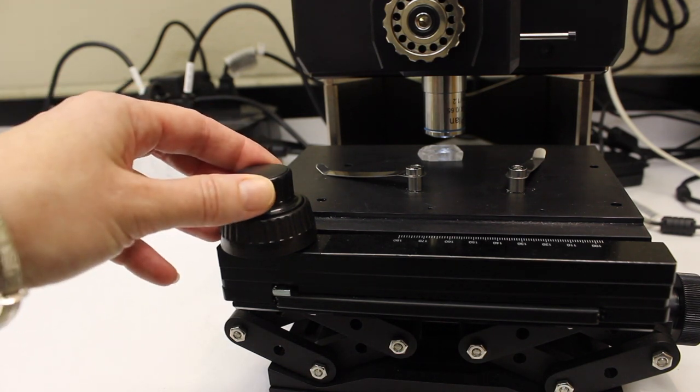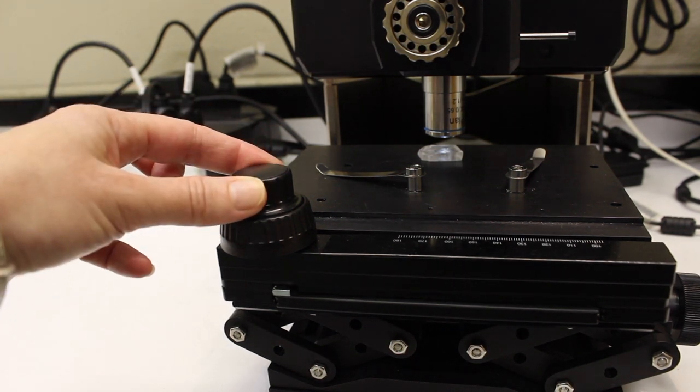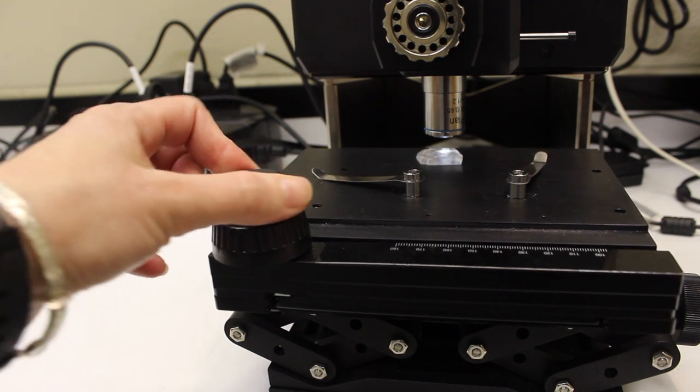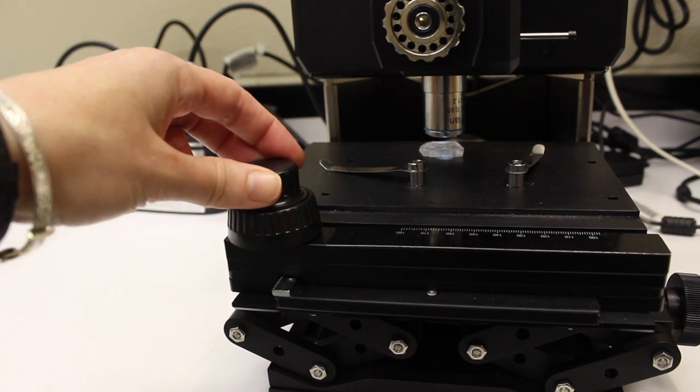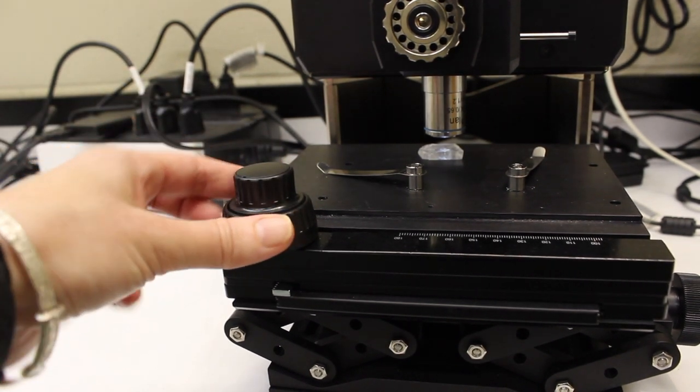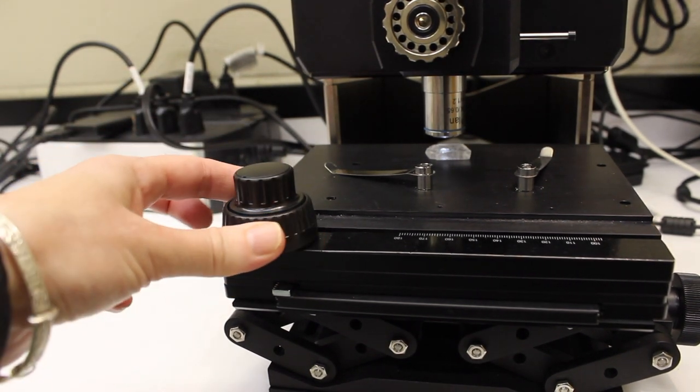To move the stage in the north-south direction, use the top knob on the stage. To move the stage in the east-west direction, use the bottom knob on the stage.